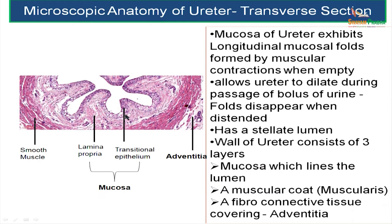This is the histological picture of ureter. You can see that the mucosa of the ureter exhibits longitudinal mucosal folds. These are the mucosal folds formed by muscular contractions when empty. These folds are present to allow the ureter to dilate during passage of a bolus of urine.